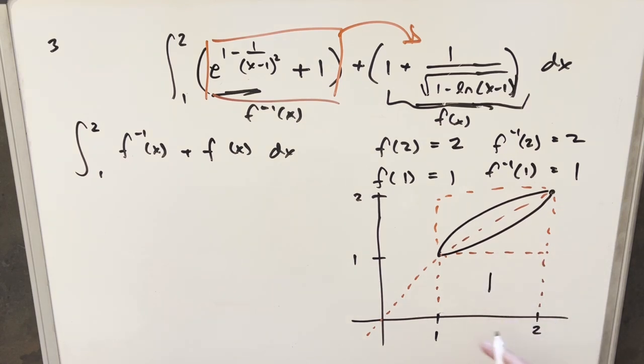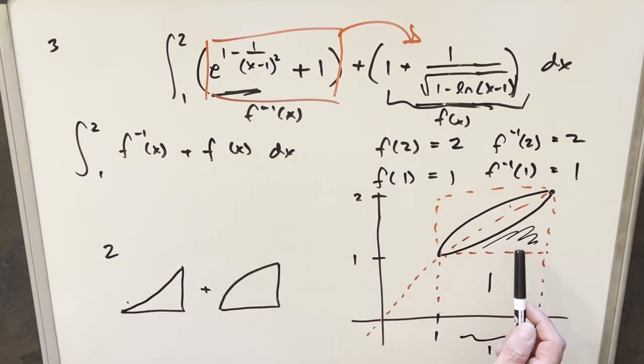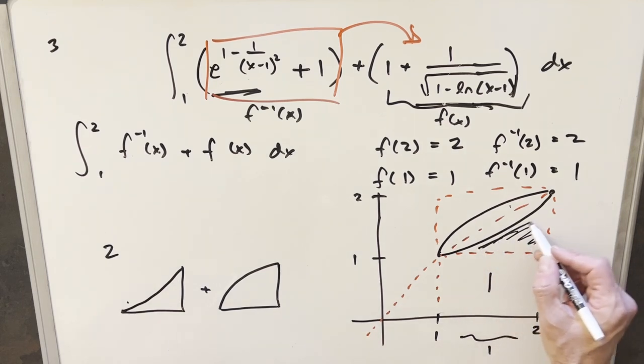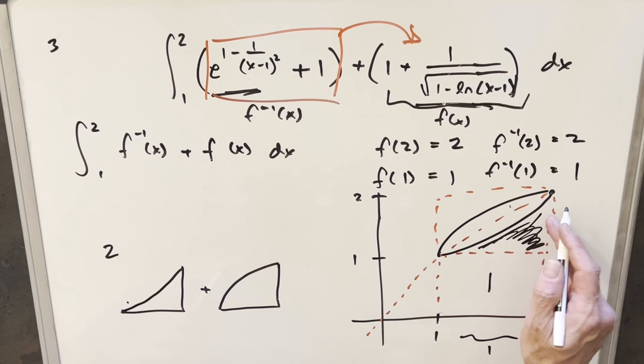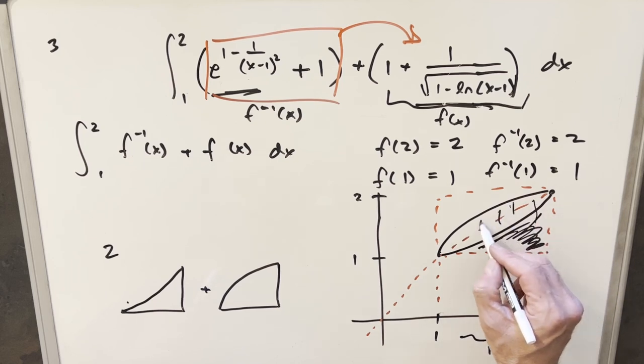Now, of course, we know the area of this box right here, because this width right here is 1 and this height is 1. So the area of this square is just 1 and we have two copies of it. So we're going to have 2 from that right there. So what's happening in this region, I know I could probably use a better sketch. But anyway,